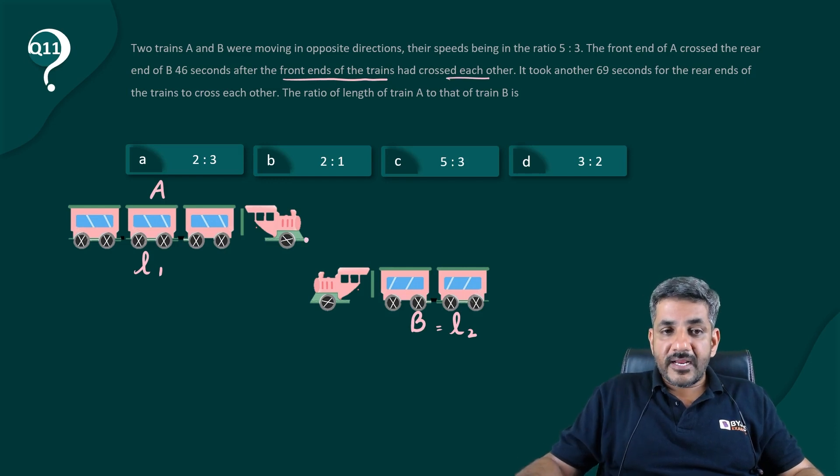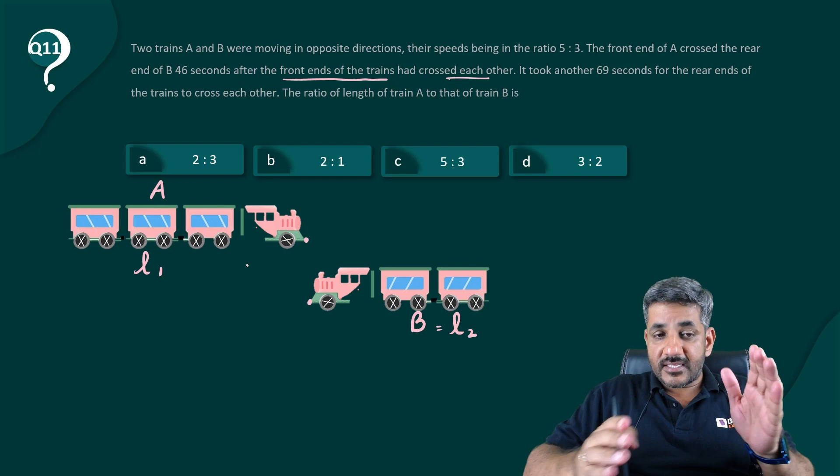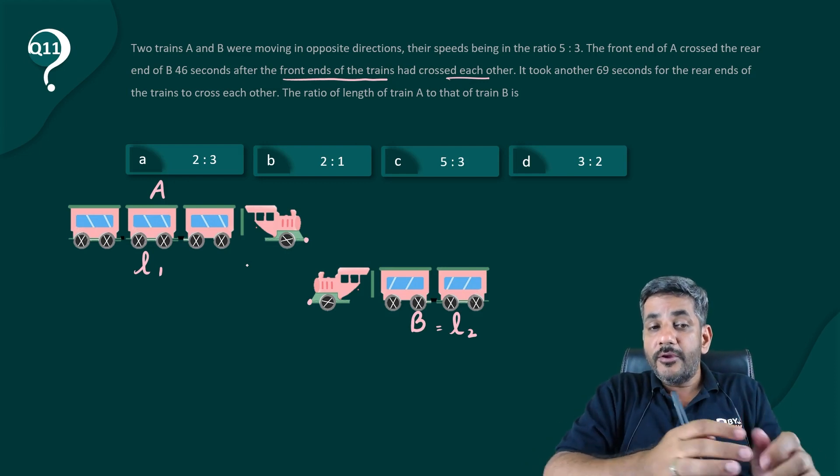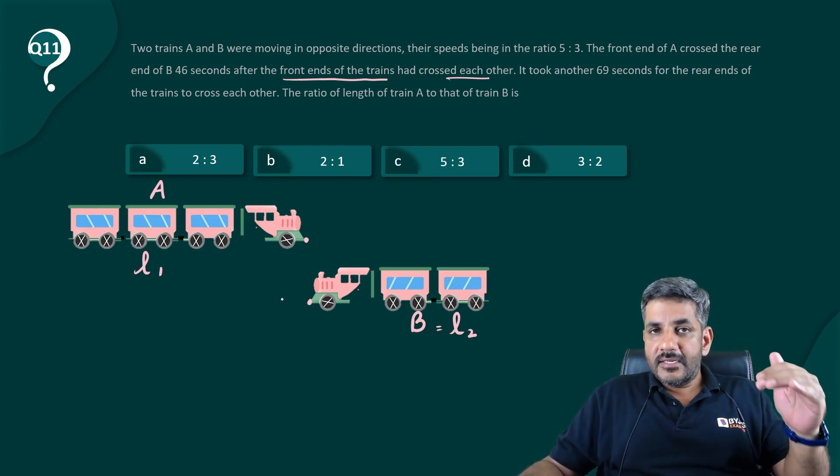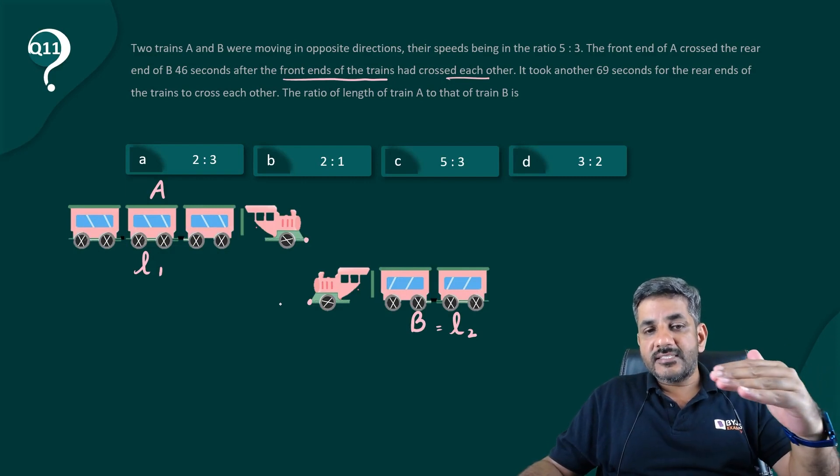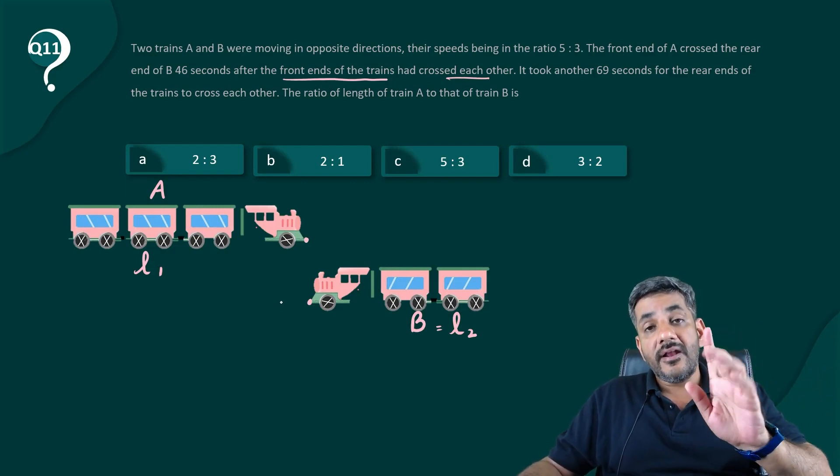So when the front ends of the two trains have crossed each other, that is the point which I am showing you on the screen. From this point, this train A takes 46 seconds to reach the rear end of B.